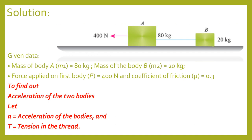The given data: mass of body A is 80 kg, mass of body B is 20 kg, external force applied on body A is 400 N, and the coefficient of friction between both bodies and the horizontal rough surface is 0.3. We have to find the acceleration of both bodies and the tension in the thread. Both bodies will have the same acceleration since they are connected by a thread.